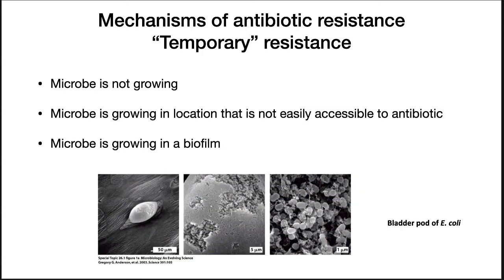How do pathogens become resistant to antibiotics? First, there are mechanisms of temporary resistance. The microbe may not be growing — many antibiotics need the microbe to grow in order to kill it. The microbe may also be growing in a location that is not easily accessible, or it may be growing in a biofilm.